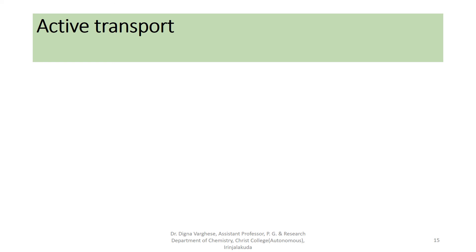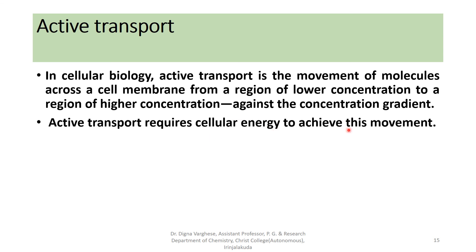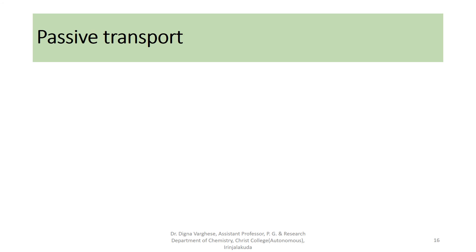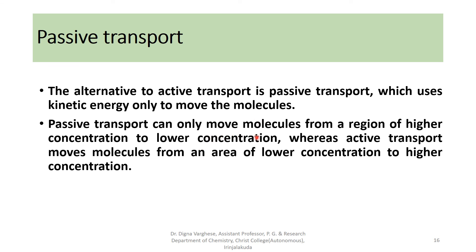In cellular biology, active transport is the movement of molecules across a cell membrane from a region of lower concentration to a region of higher concentration — against the concentration gradient — and requires cellular energy. There are two types: primary active transport, which uses adenosine triphosphate (ATP), and secondary active transport, which uses an electrochemical gradient. In contrast, passive transport uses kinetic energy only and can only move molecules from a region of higher concentration to a lower concentration.